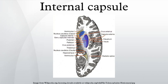For example, thalamoperforator arteries, which are branches of the basilar artery, occasionally supply the inferior half of the posterior limb. Ellis Clinical Anatomy states the posterior cerebral artery also supplies the posterior part of the internal capsule.